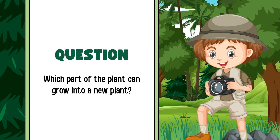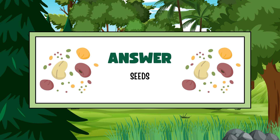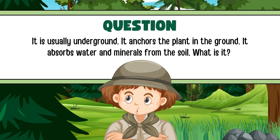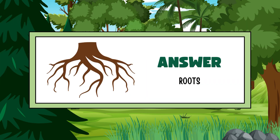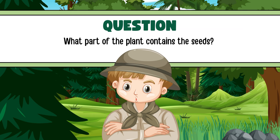Next question: which part of the plant can grow into a new plant? The answer is seeds. Next question: it is usually underground, it anchors the plant in the ground, it absorbs water and minerals from the soil. What is it? The answer is roots.